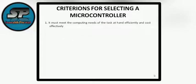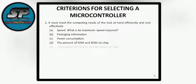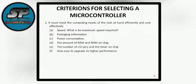What are the selection criteria for a microcontroller? The first and foremost criterion is that it must meet the computing needs of the task at hand efficiently and cost-effectively. For that, one can look at the speed — the maximum speed at which the processor or controller can run — the packaging information, the power consumption, the amount of RAM and ROM on chip, the number of input-output pins and timers on chip, how easy it is to upgrade to higher performance, and of course the cost per unit.